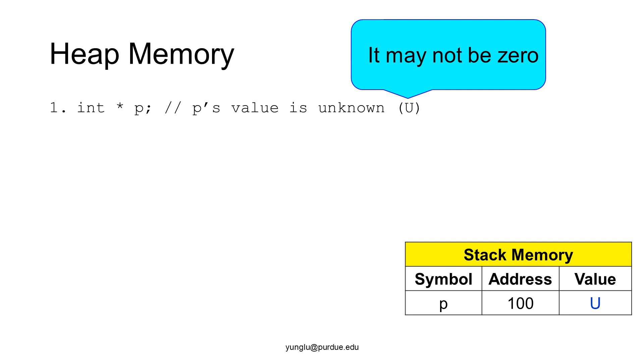The first step creates a pointer in the stack memory. The pointer is a local variable and thus it is on the stack memory. Please be careful that p's value is not initialized and thus is unknown. Please be careful. P's value may not be zero.